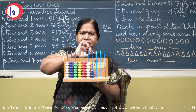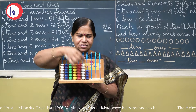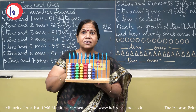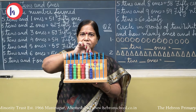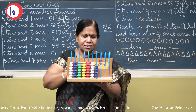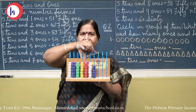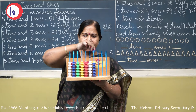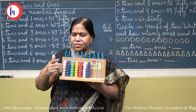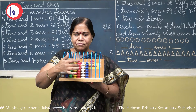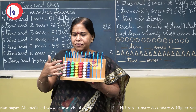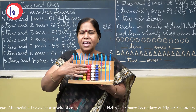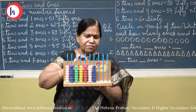Now tell me which number we have passed. Yes, 5 tens and 4 — 54. Now 5 tens and 5 — which number will form? 55. 5 tens and 6 — 56. 5 tens and 7 — 57. 5 tens and 8 — 58. 5 tens and 9 — 59.